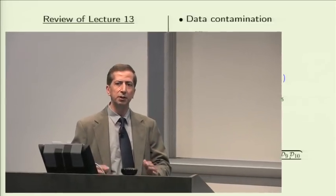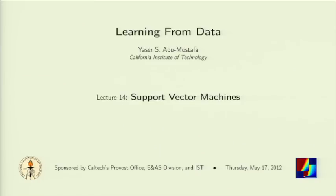Invariably in any learning situation you will need to choose a model, a parameter, something — you'll need to make a decision — and validation is the method of choice for that. So we move on to today's lecture: support vector machines. Support vector machines are arguably the most successful classification method in machine learning. They have a principled derivation, a very nice optimization package for the solution, and the solution also has a very intuitive interpretation — a very neat piece of work for machine learning.